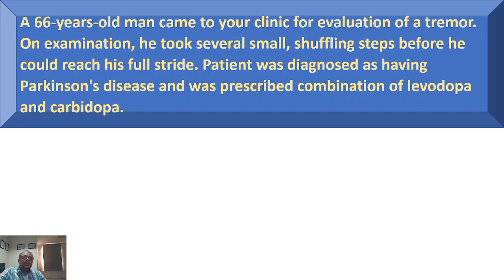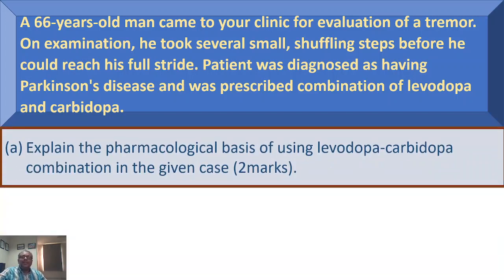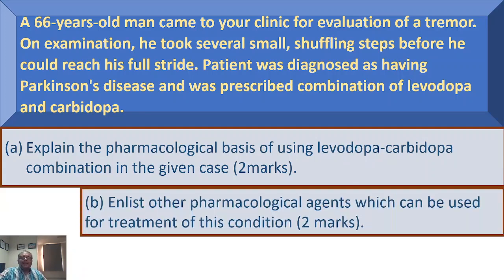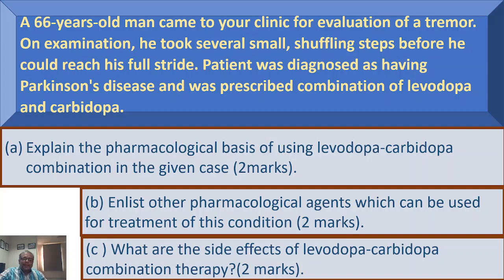Next time we will discuss this case: a 66-year-old man came to a clinic for evaluation of tremor. On examination, he took several small shuffling steps before reaching full stride. The patient was diagnosed as having Parkinson's disease and was prescribed levodopa and carbidopa combination. Questions will cover the pharmacological basis of levodopa-carbidopa combination, other pharmacological agents for this condition, and side effects of levodopa-carbidopa combination therapy.